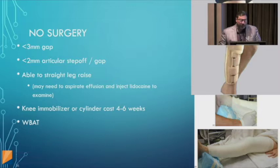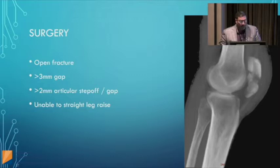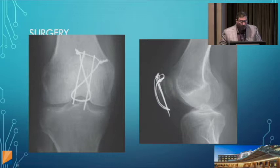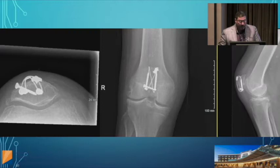Non-operative treatment is possible if the patient can do a straight leg raise and there's minimal articular step-off — the patient mobilizes with the knee straight for a couple of weeks, then transitions to a hinged brace. All open fractures need surgery. If the patient cannot do a straight leg raise or there's a large articular step-off, these need to be fixed. Different fixation methods include cerclage wire, tension band wire, and hybrid fixation with plates and screws.